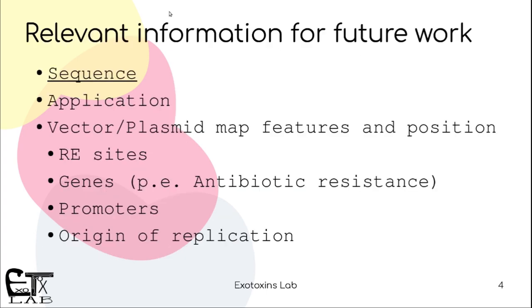But if you really need to work with a plasmid, you need to have some specific information about it. You need a sequence, and you need to know what exactly it was made for, because not everybody knows all the different applications, and new ones are being created all the time. Then you have the vector plasmid map, which usually has more than what I showed you. It should have some features and the position of these features — meaning where exactly the restriction enzyme sites are cutting.